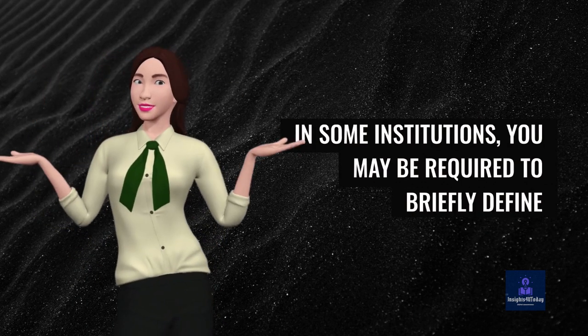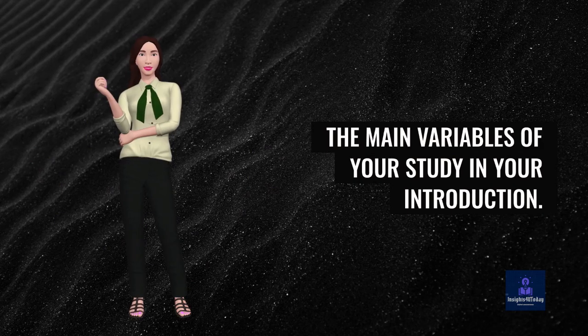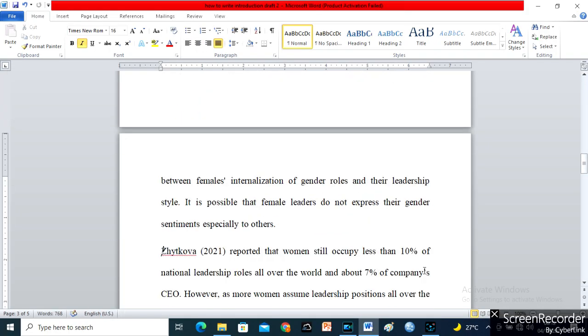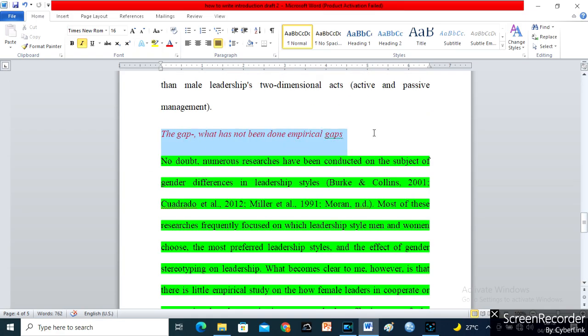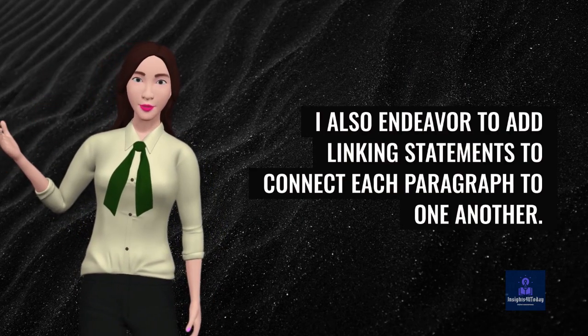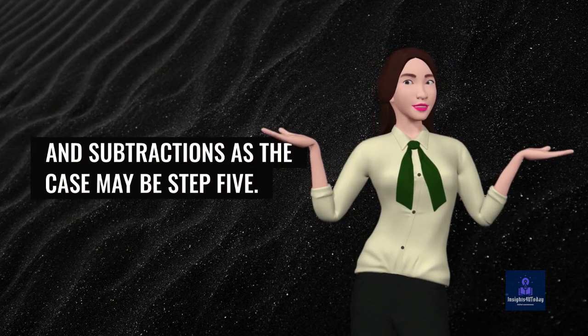In some institutions, you may be required to briefly define the main variables of your study in your introduction. I do not forget to remove the objectives I have in red. For literature treated on each objective, I add my own idea. I also endeavor to add linking statements to connect each paragraph to one another. Then, I go through what I have written, making additions and subtractions.